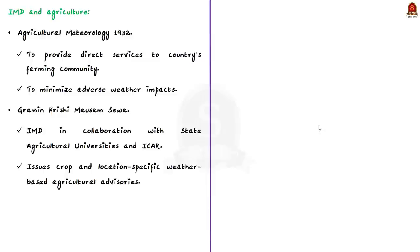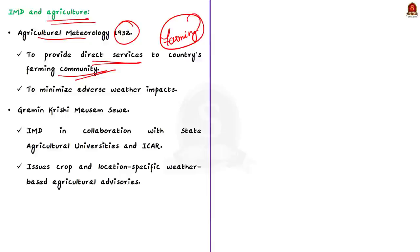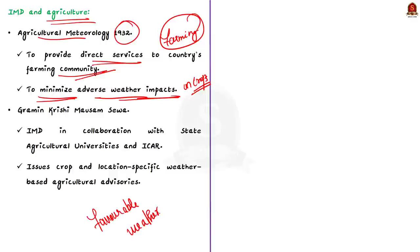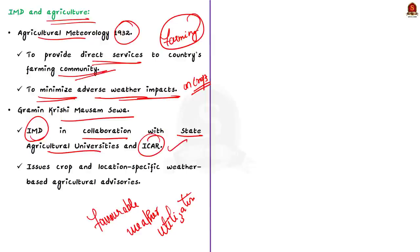Now let's see the role of IMD in relation to agriculture. IMD has a separate division called the Agricultural Meteorology Division, established in 1932, mainly to provide direct services to the farming community since Indian agriculture is predominantly rain-fed. Its main objective is to minimize the impact of adverse weather on crops and make use of favorable weather to boost agricultural production. An important scheme here is the Gramin Krishi Mausam Seva, implemented by IMD in collaboration with State Agricultural Universities and the Indian Council of Agricultural Research, through which IMD issues crop and location-specific weather-based agricultural advisories for the farming community.